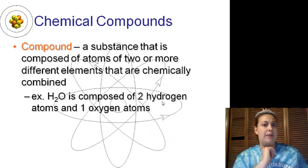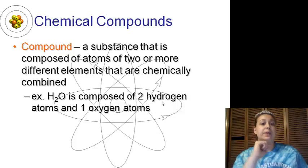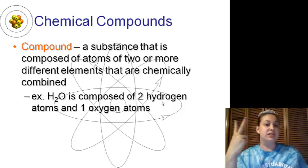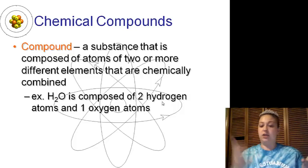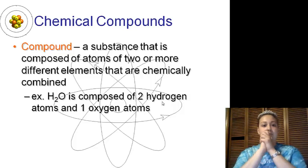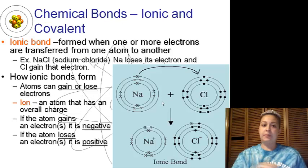Talking about chemical compounds - a substance that is composed of two or more different elements that are chemically combined, such as water, H2O, two hydrogen, oxygen, combined, we have a compound.